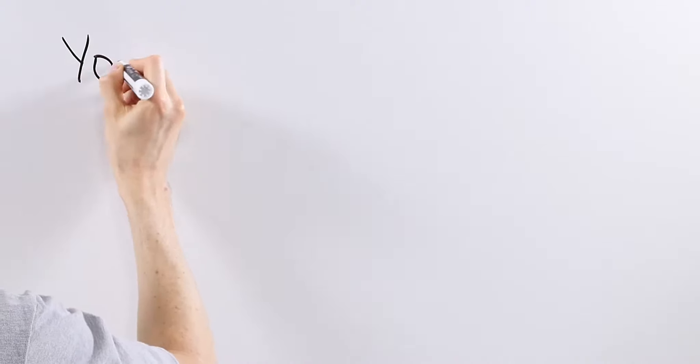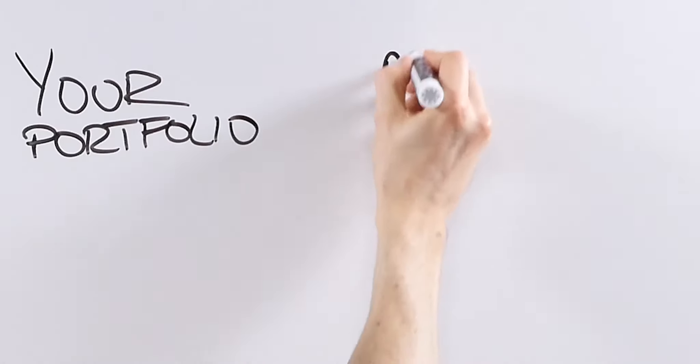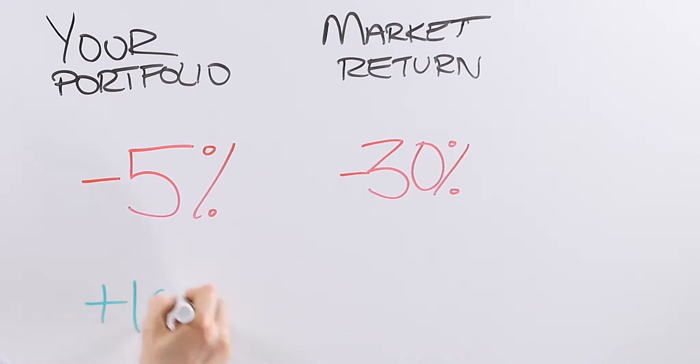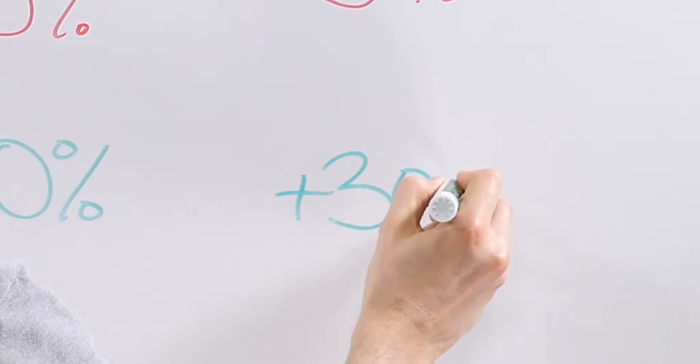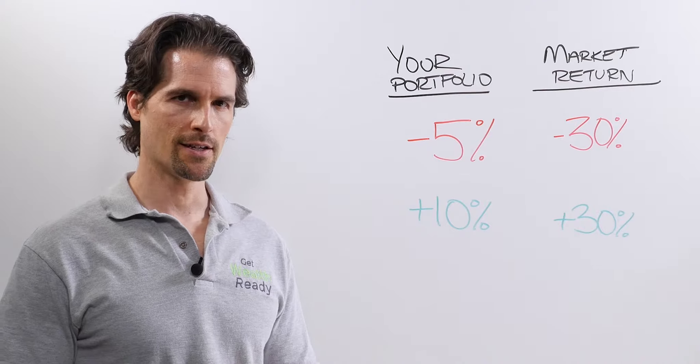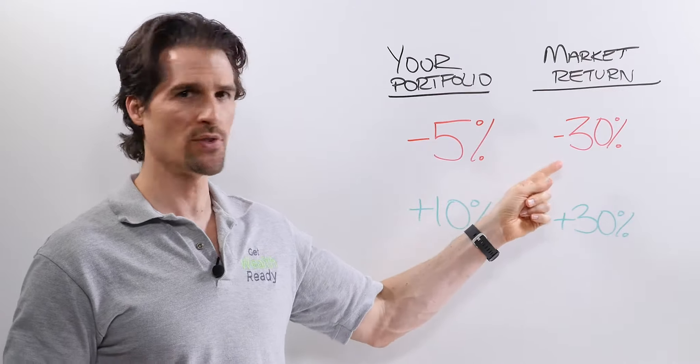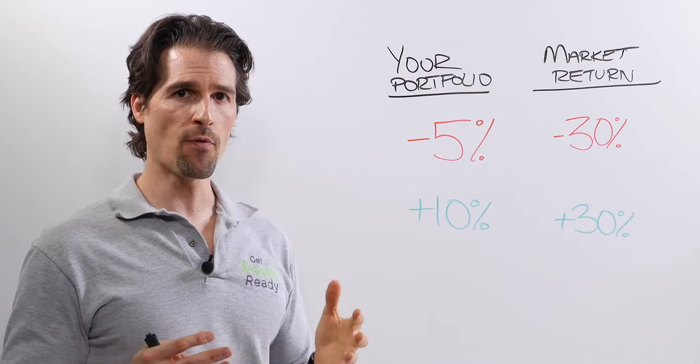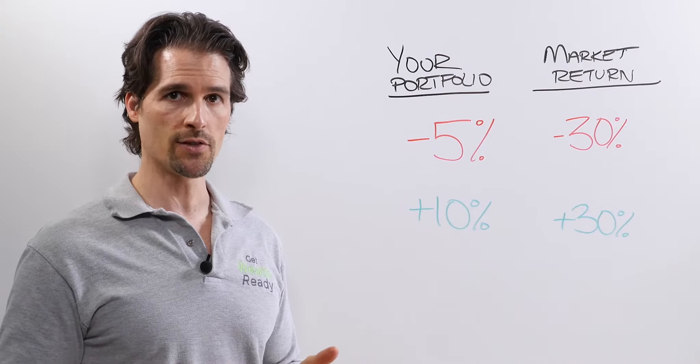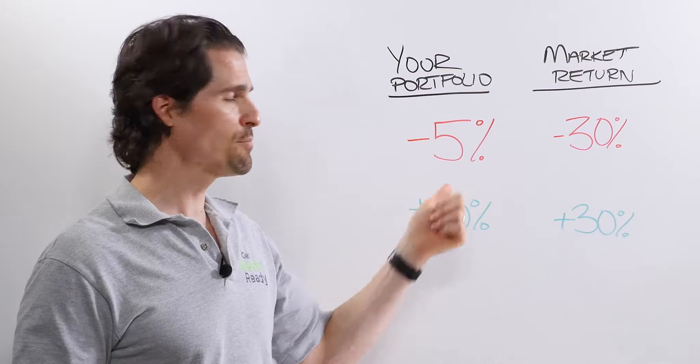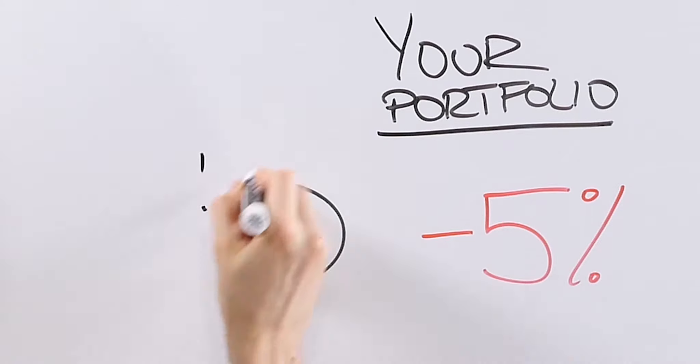And this is why you can be upset with a positive 10% return, but thrilled with losing 5%. How is that possible? Well, back in 2008, the stock market did poorly. It was down over 30%. If you looked at the performance of your portfolio for 2008, and you were down 5%, this is what you would look like.